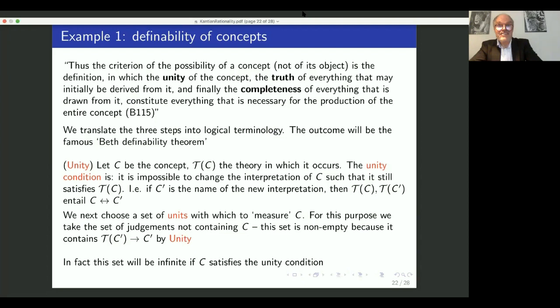So here's how he applies the general procedure outlined on the previous page to concepts. Thus the criterion of the possibility of a concept, not of its object, is the definition in which the unity of the concept, the truths of everything that may be initially derived from it, and finally the completeness of everything that is drawn from it, constitute everything that is necessary for the production of the entire concept.